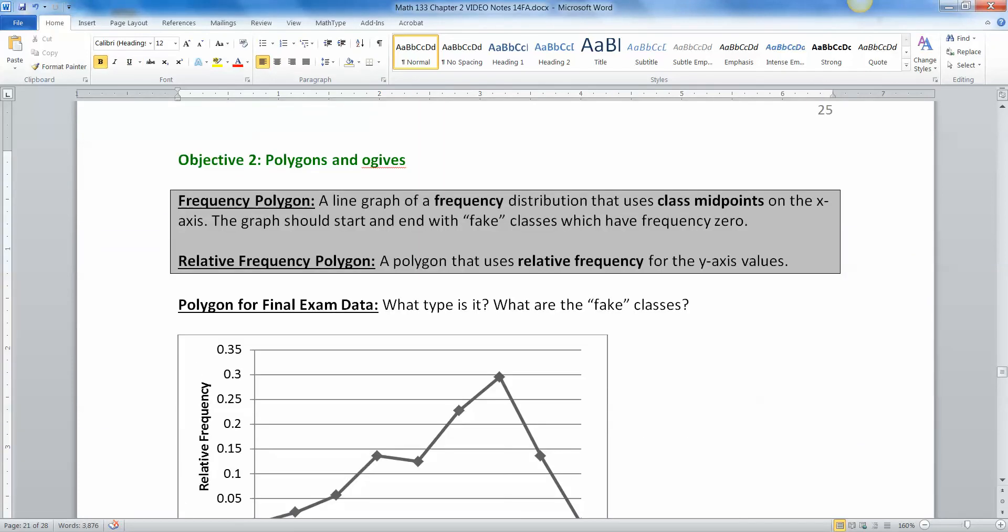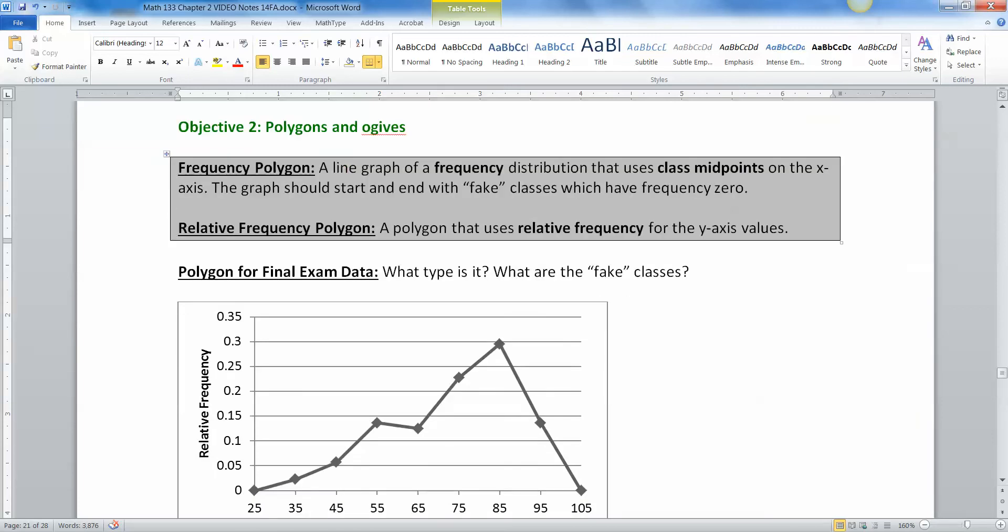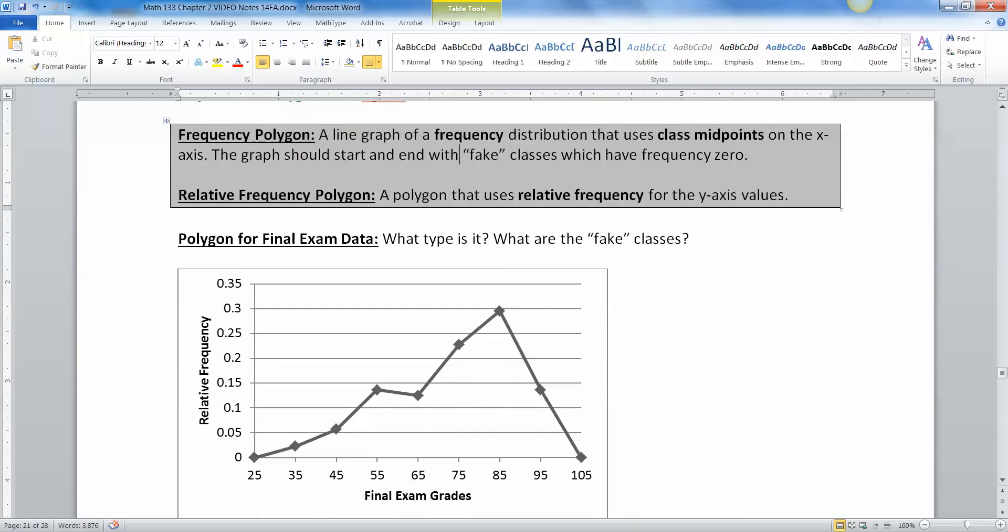Now let's look at polygons. Frequency polygons are line graphs of a frequency distribution. It uses the class midpoints on the x-axis. And then we should always start these graphs with a fake class, basically, that starts at zero. And we should actually end with a fake class. Start and end. There it is. Start and end with a fake class of zero. And a relative frequency polygon is the same thing. It just uses relative frequency instead of frequency.